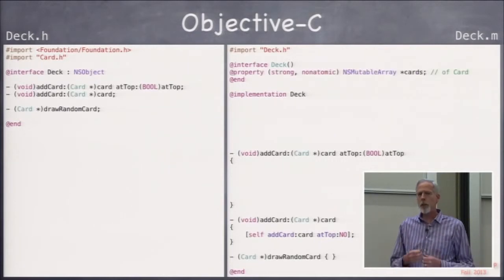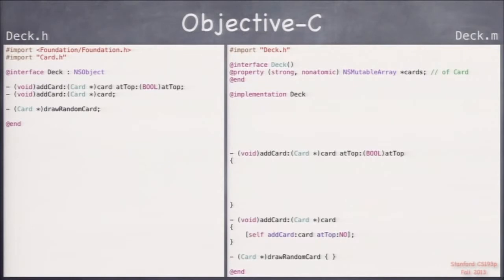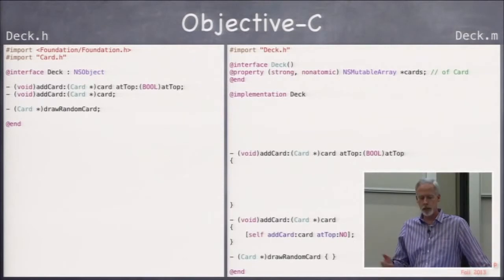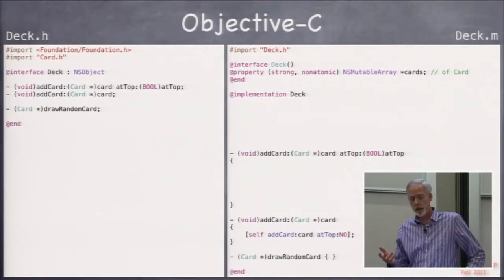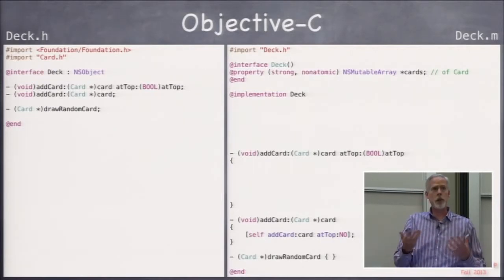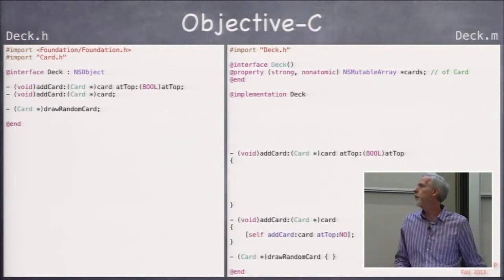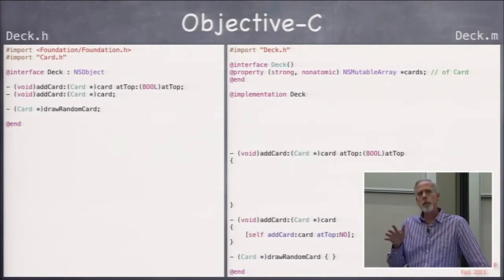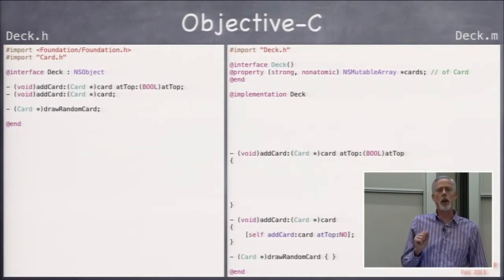Let's talk about our implementation of our deck. Our deck is just going to contain a bunch of cards. We need some internal data structure to store all our cards in. We're going to use a mutable array. You've already seen the class NSArray, which is the foundation class array, an array of objects.